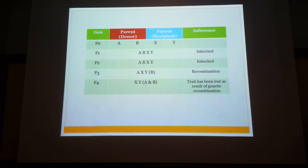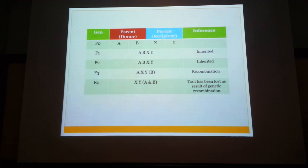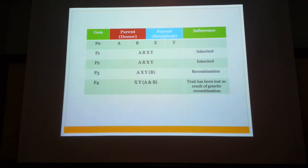However, in F3, A, X and Y amplify the markers, but B does not. So we can assume recombination because the marker associated with that specific trait has been lost as a result of recombination. Finally, in the F4 generation, you again have X and Y, but A and B are not present. When you amplify, you get only two PCR products and the remaining products are not present. So the trait has been lost, likely as a result of genetic recombination.